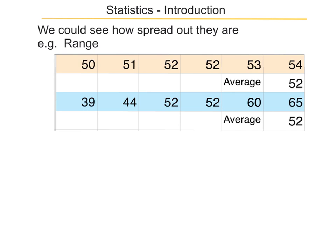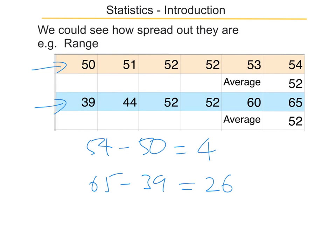We'll be using the range to find out how spread out the numbers are. For the first lot of data, the range is 54 take away 50, which is 4. For the second set of data, the range is 65 take away 39, which is 26. So you can see straight away that while they have the same average, there's something very different about the two sets of data.